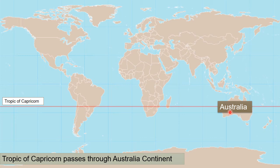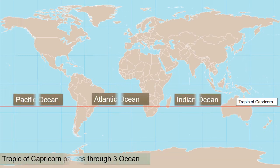Now talking about the Australia continent — the Tropic of Capricorn passes through this continent, specifically through the country of Australia. The Tropic of Capricorn also passes through three oceans: first is the Pacific Ocean, second is the Atlantic Ocean, and third is the Indian Ocean.